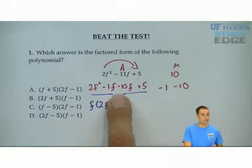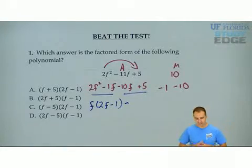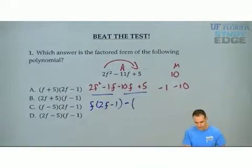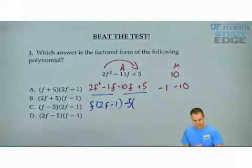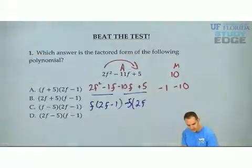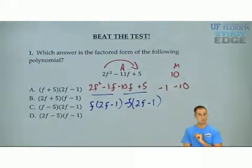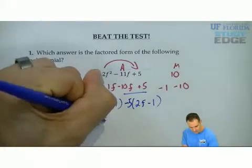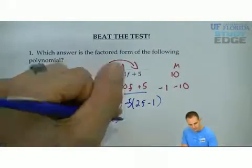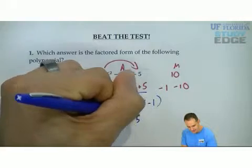That means I'm going to factor in a negative, and all the signs are going to change. I can also factor out a 5, leaving me with positive 2f minus 1. I have 2f minus 1 in common, and what's left on the outside is f minus 5.